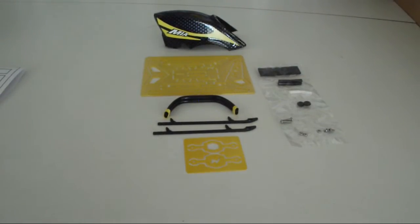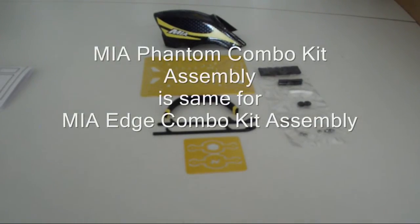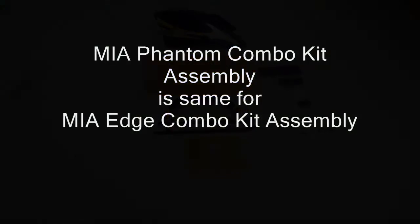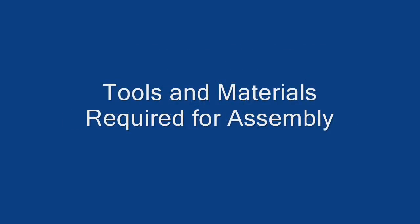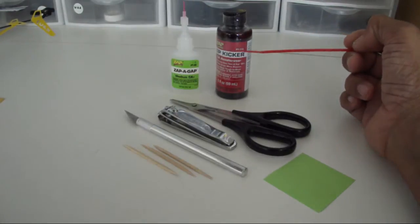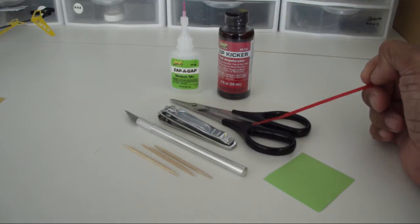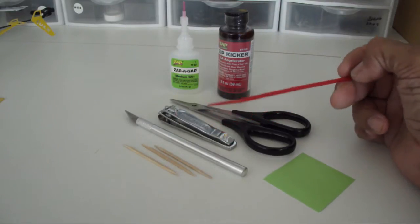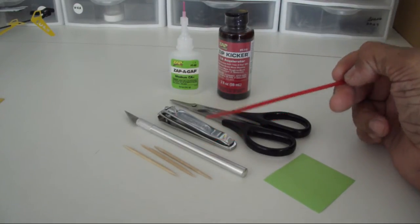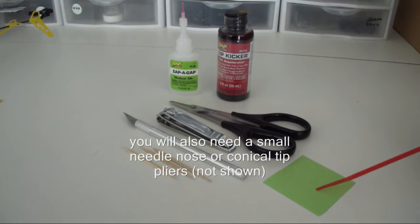This is the combo for the EMEA Microflight Phantom option. Tools required: medium CA glue, CA glue accelerator spray, hobby scissors, nail clippers, exacto knife, toothpicks, and a small piece of paper or note pads.